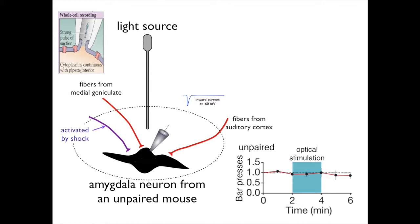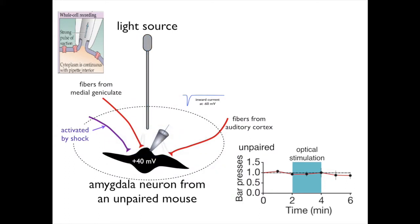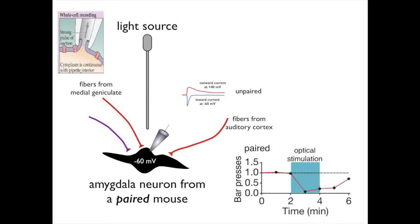The membrane potential is then changed and clamped at plus 40 millivolts. When the light is again turned on, a current flowing outward is recorded and shown as the red trace. Another recording is then made from a neuron, but this time the slice was from a mouse that had experienced paired optical stimulation and had expressed fear when optical stimulation of the amygdala was presented alone. Current records are obtained with the membrane potential clamped at minus 60 millivolts and at plus 40.